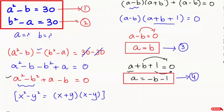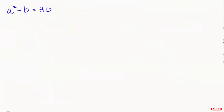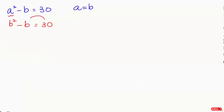Now I'm going to take equation 1: a squared minus b equals 30. Case 1 tells us a equals b, so I substitute b for a: b squared minus b equals 30. Taking 30 to the left hand side gives b squared minus b minus 30 equals 0.